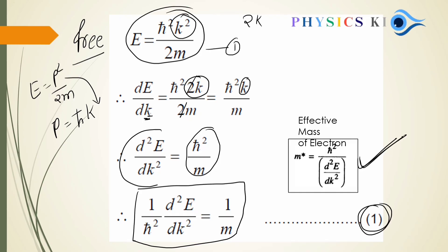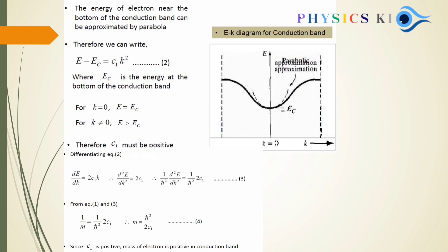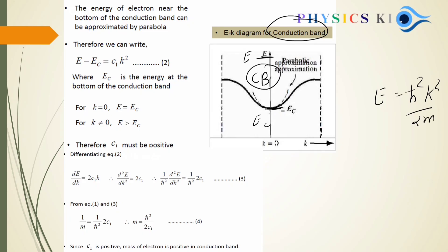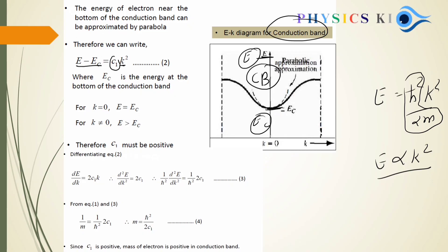For the conduction band, the electron energy is E, and EC is the lower energy at the band bottom. We write E = ℏ²K²/2M. Energy is proportional to K², so E − EC = C₁K², where C₁ is a constant that reflects the mass value. EC is the energy at the bottom of the conduction band; when K = 0, E = EC.